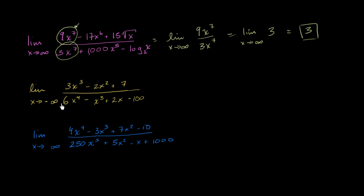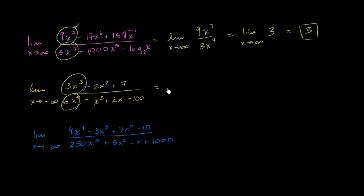Now let's do the same with this function over here. Once again, crazy function — we're going to negative infinity, but the same principles apply. Which terms dominate as the absolute value of x gets larger and larger? Well, in the numerator it's the 3x to the 3rd term, and in the denominator it's the 6x to the 4th term.